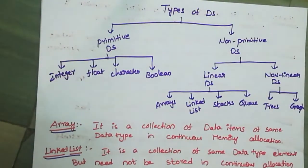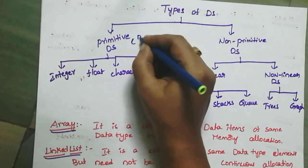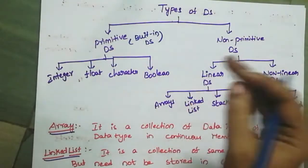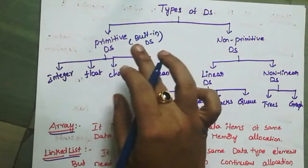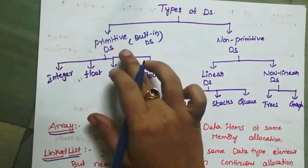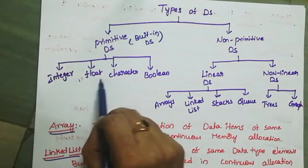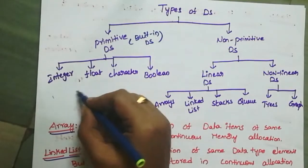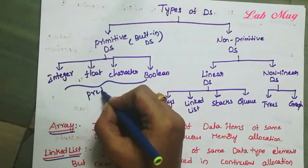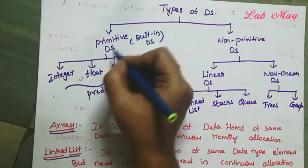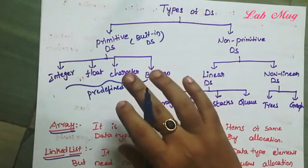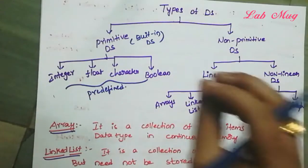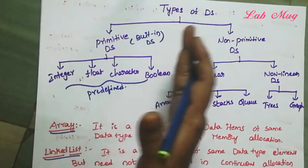Primitive Data Structures are nothing but built-in data types. The examples are Integer, Float, Character, and Boolean. These are the pre-defined data types. We call them Primitive Data Structures. These are basic data structures that are directly operated upon by machine instructions.